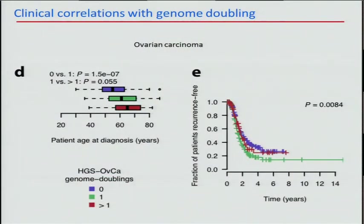Finally, just a few associations with clinical data. Patient age at diagnosis tended to increase as a function of genome doublings, which was significant, and might have some interesting relations to telomere biology. There is also a small but significant association with time to recurrence and genome doubling in ovarian cancer.